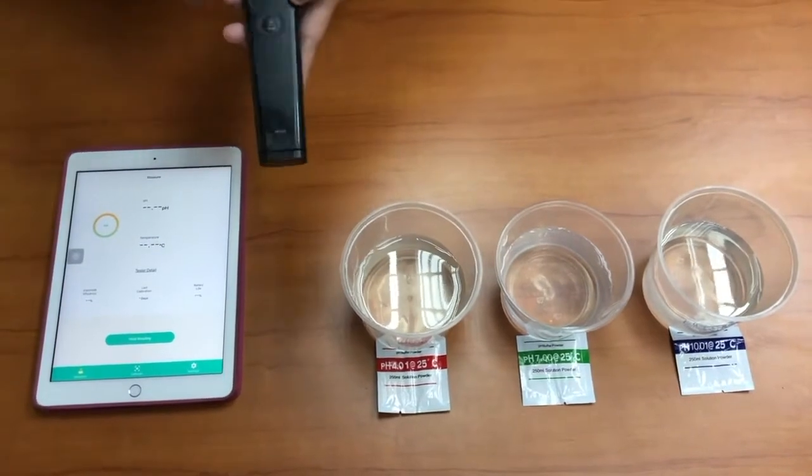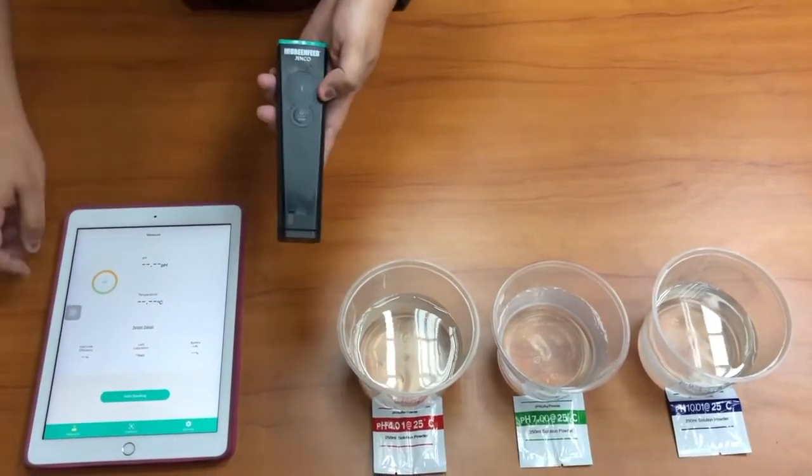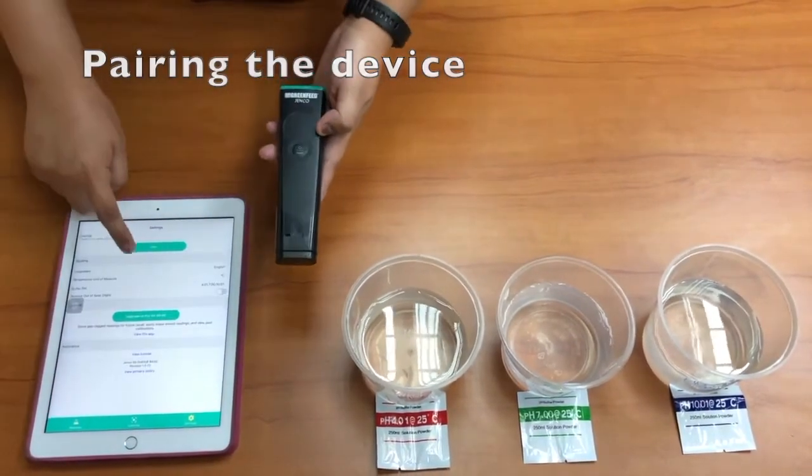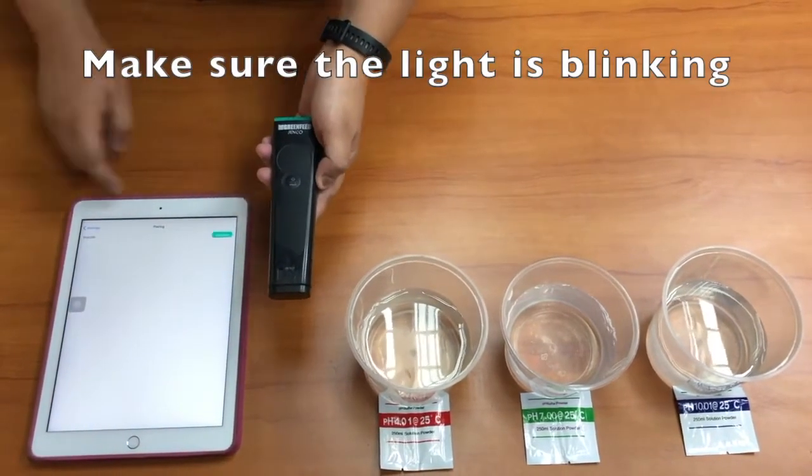Before we use it, we have to calibrate this pH meter, but before calibration, we have to pair this device to the app. We click setting and pair, turn on your device, and click connect. It's connected.